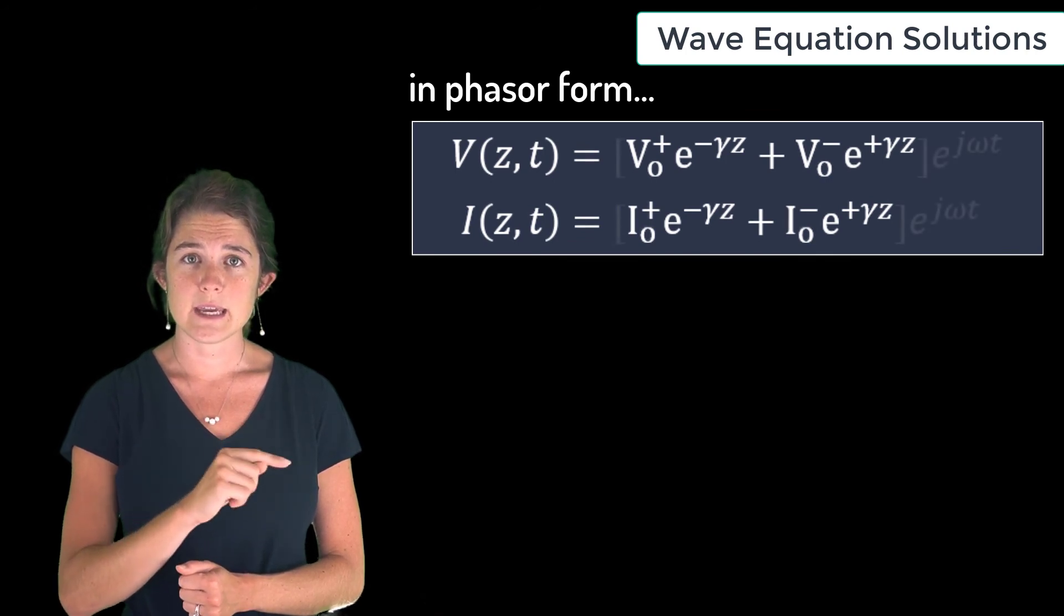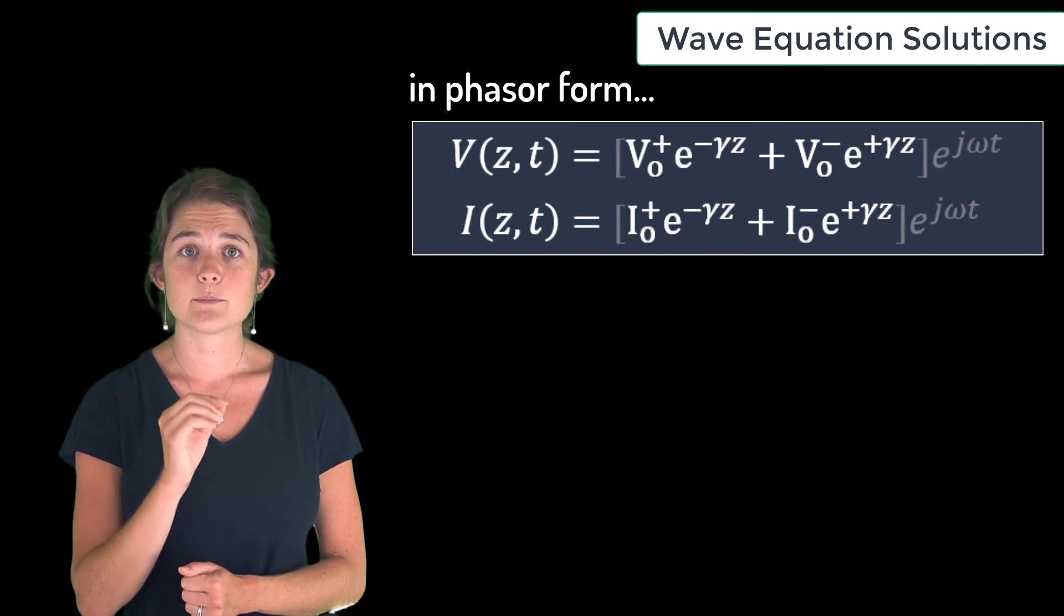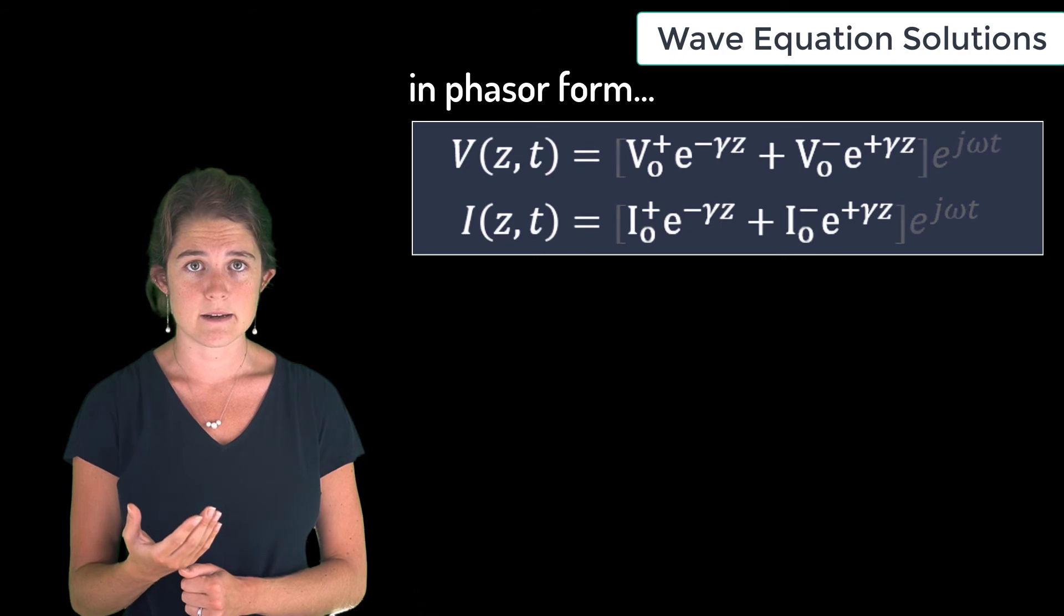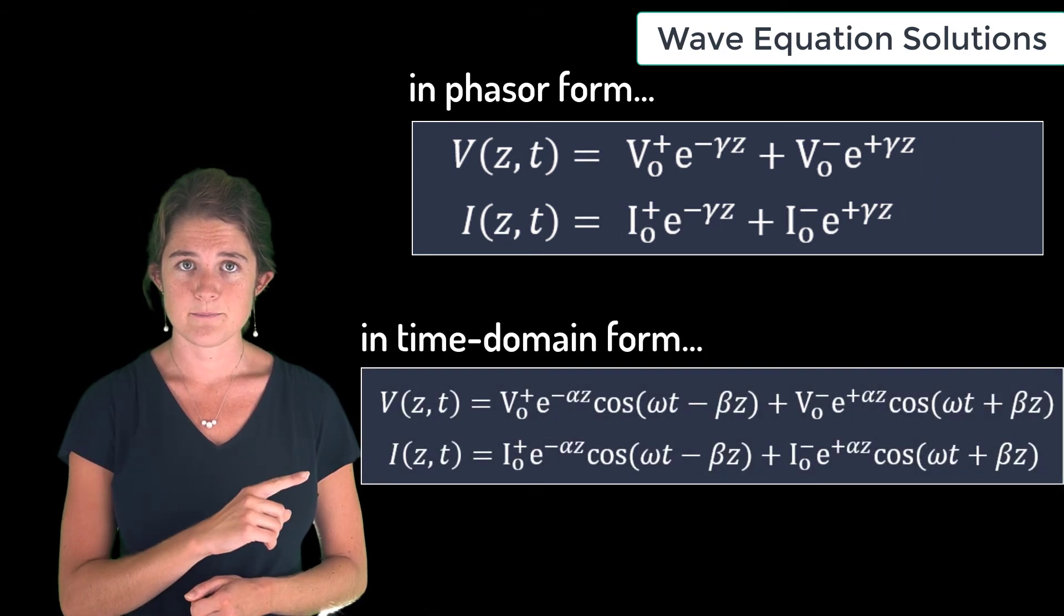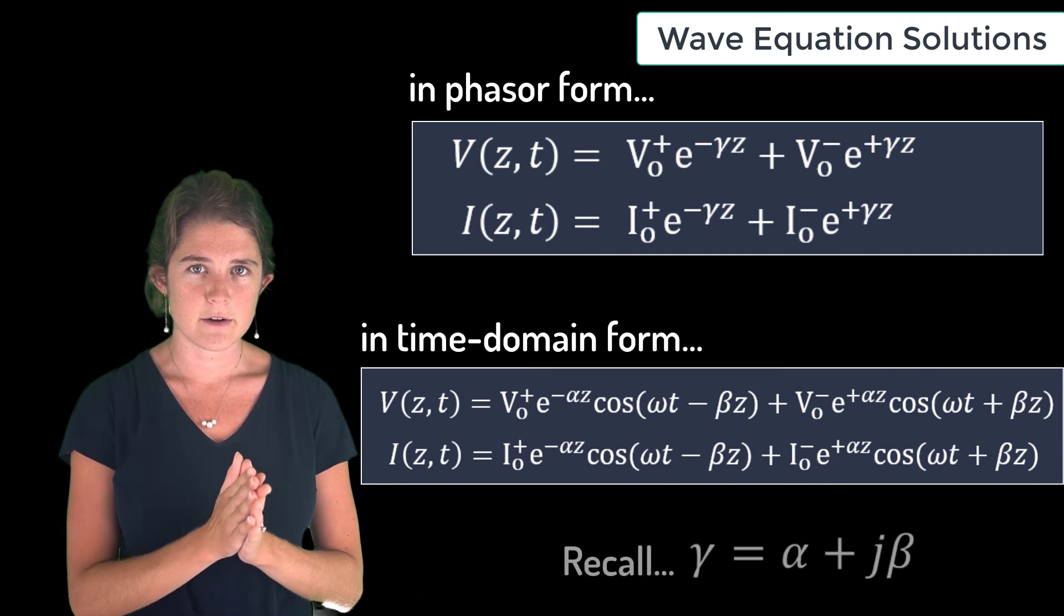you have to remember that the e^(jωt) term is still present even if it's unstated. The solutions may also be expressed in the time domain like this. Notice that here the real part of gamma had to be pulled out of the cosines.